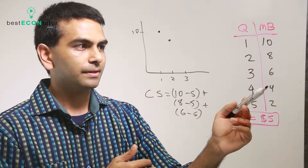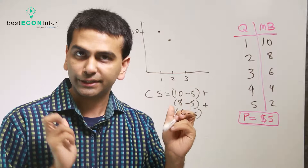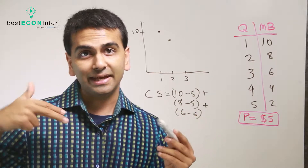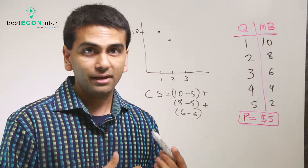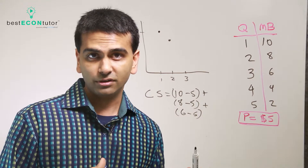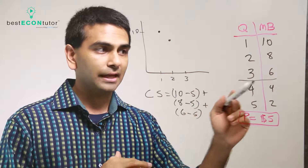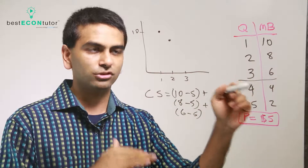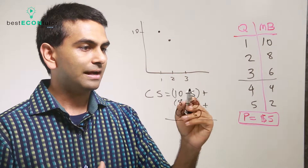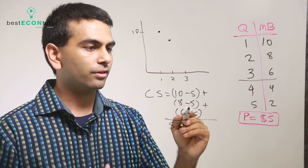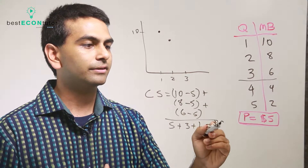Notice that the fourth item gives you only a four dollar benefit, so you wouldn't pay five dollars for it. You'd technically get a negative one dollar consumer surplus — if somebody forced you to buy it. But in the free market you don't have to buy it if you don't want to, so we assume this customer would stop buying at three. Their overall consumer surplus would be five dollars plus three dollars plus one dollar, which is a nine dollar consumer surplus.